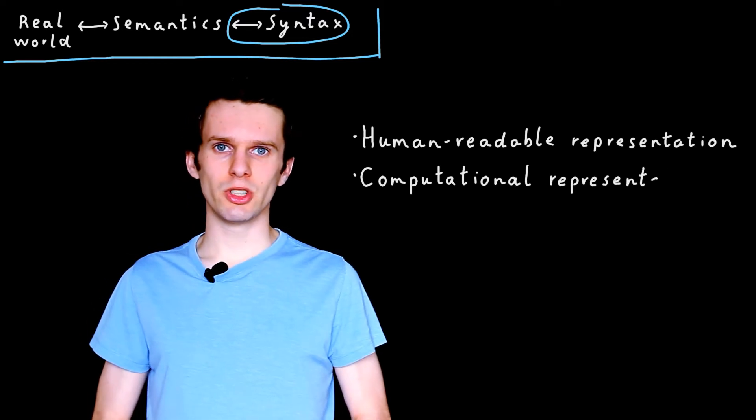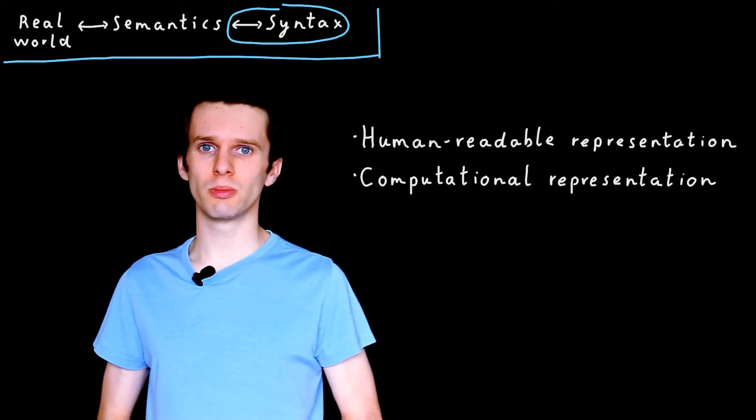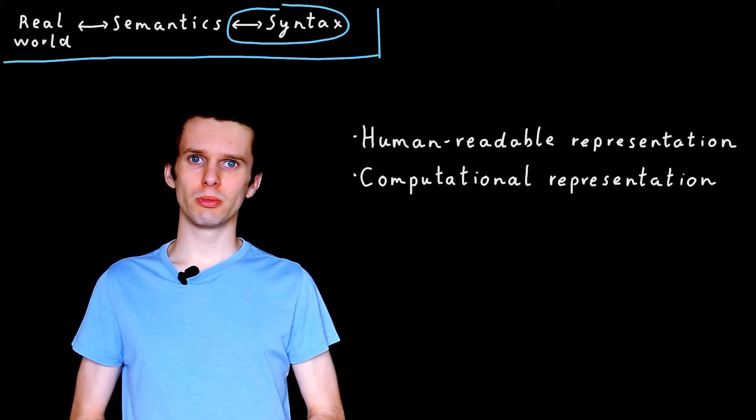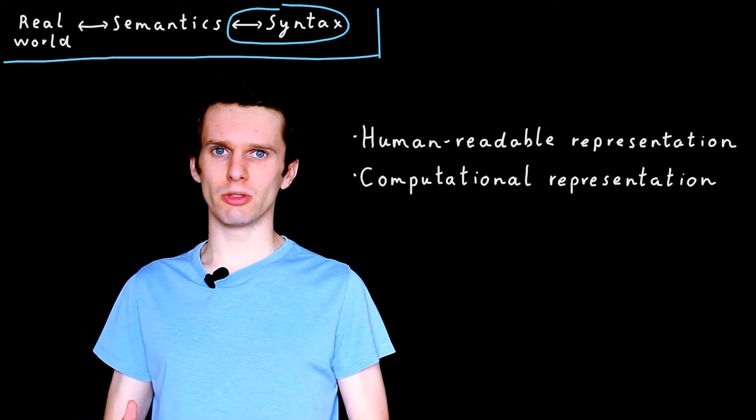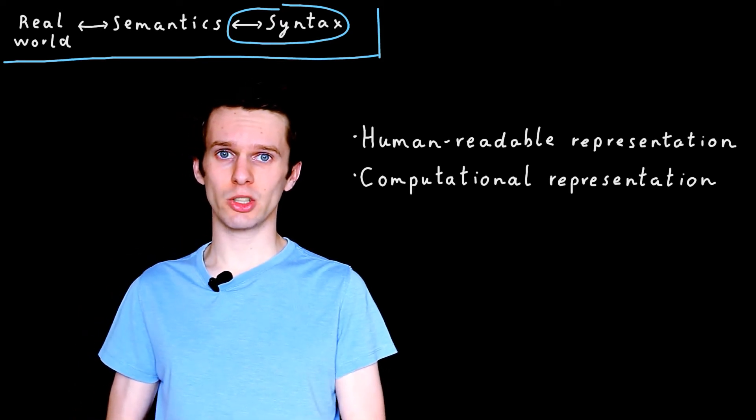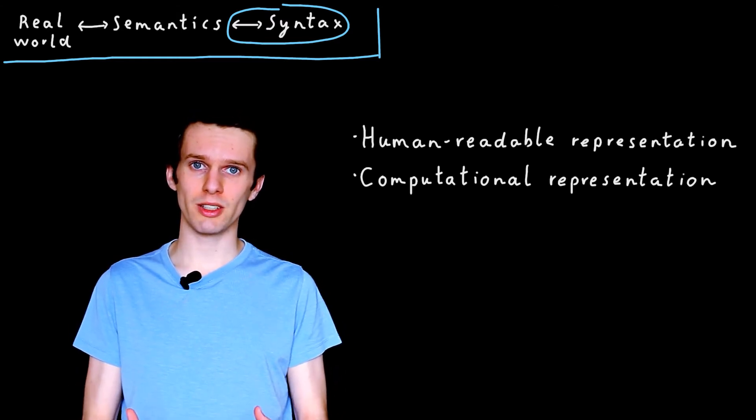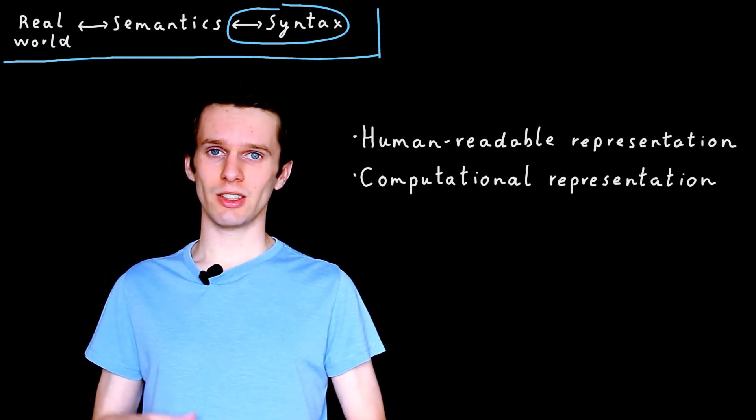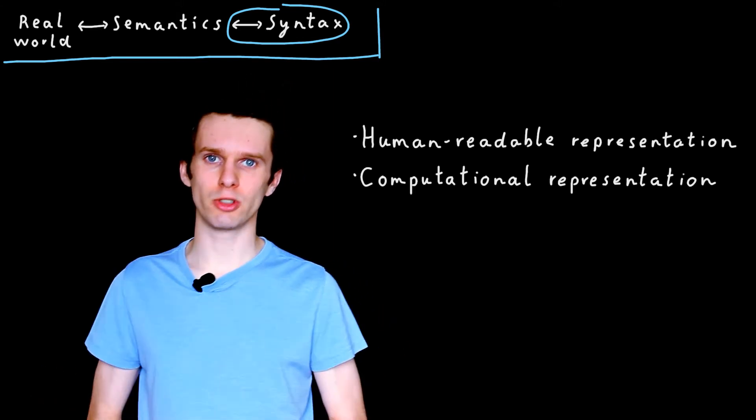It also gives us a computational representation of the real world. And this is really important because computers are really good at shuffling symbols around efficiently and without error. So it allows us to automate some of the process and allows us to use computers to help us reason about the real world.